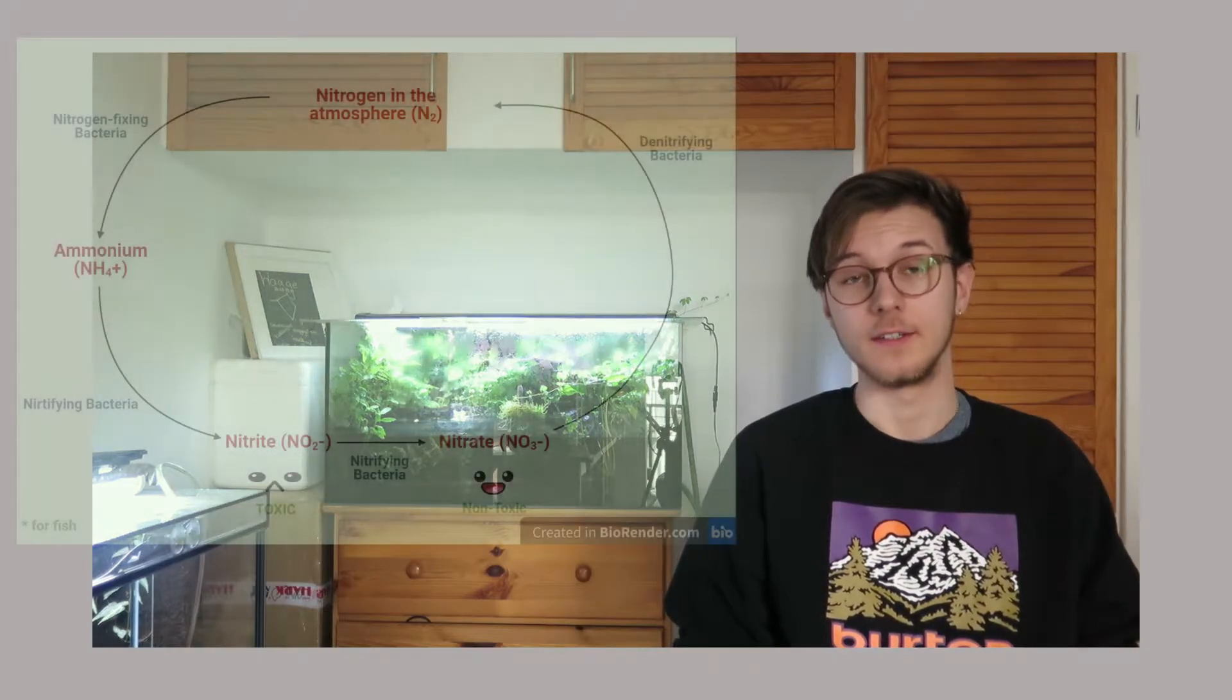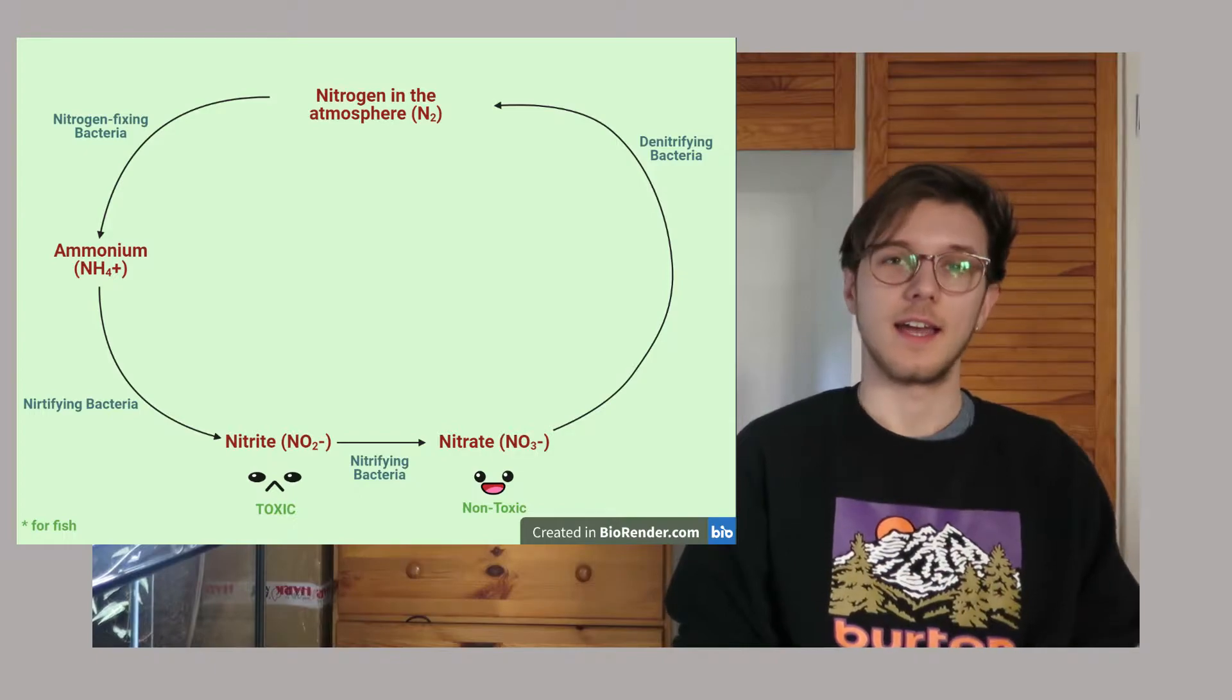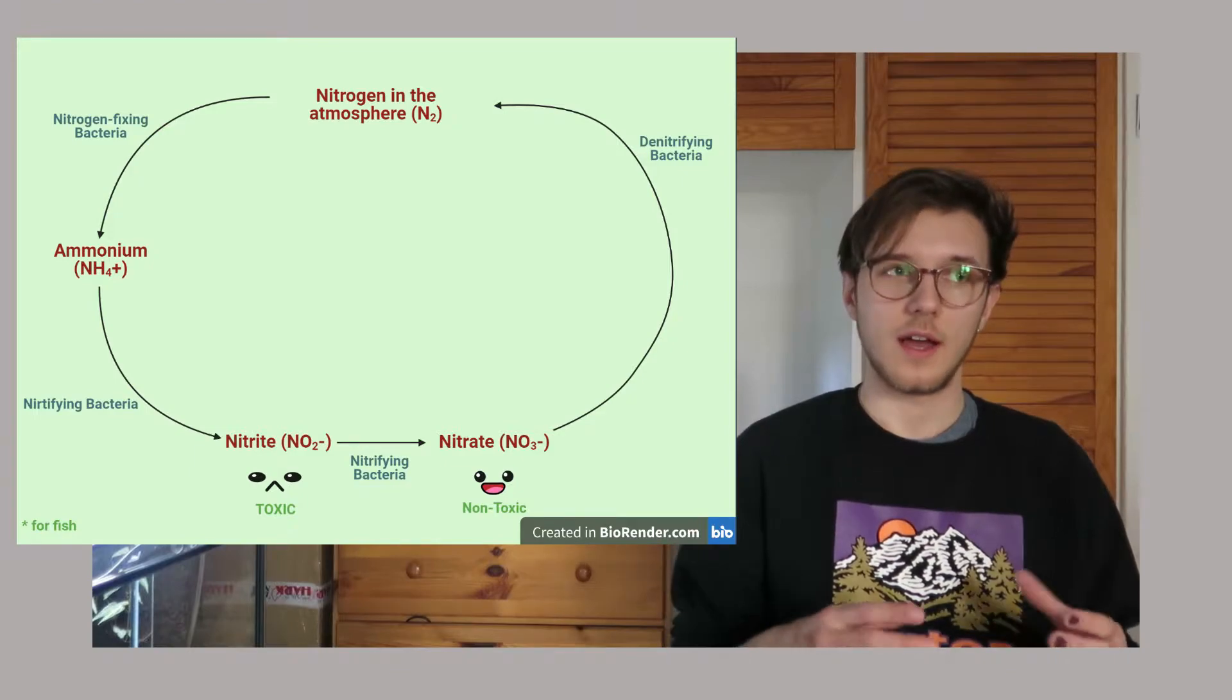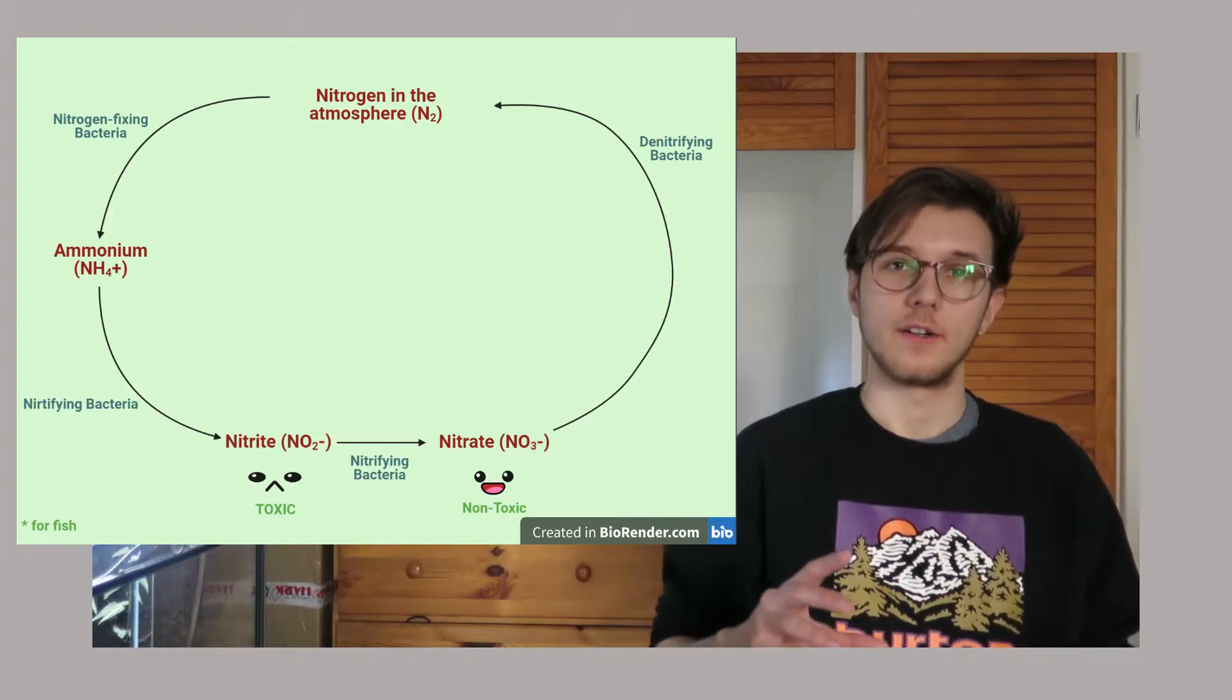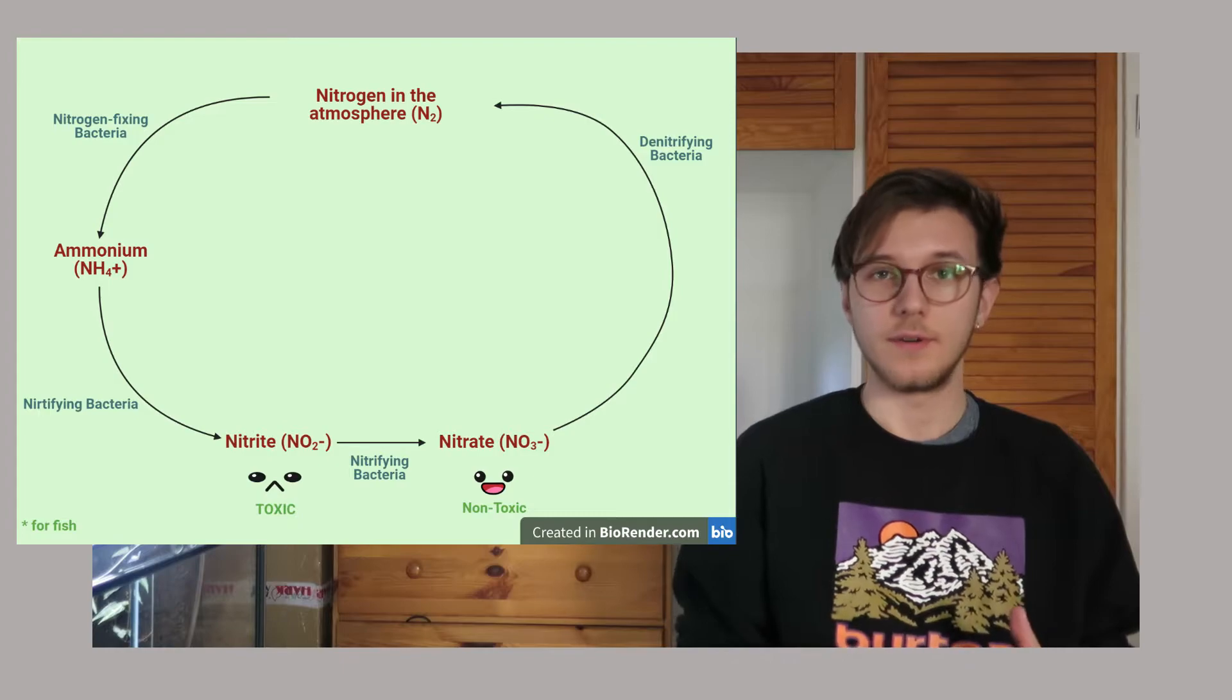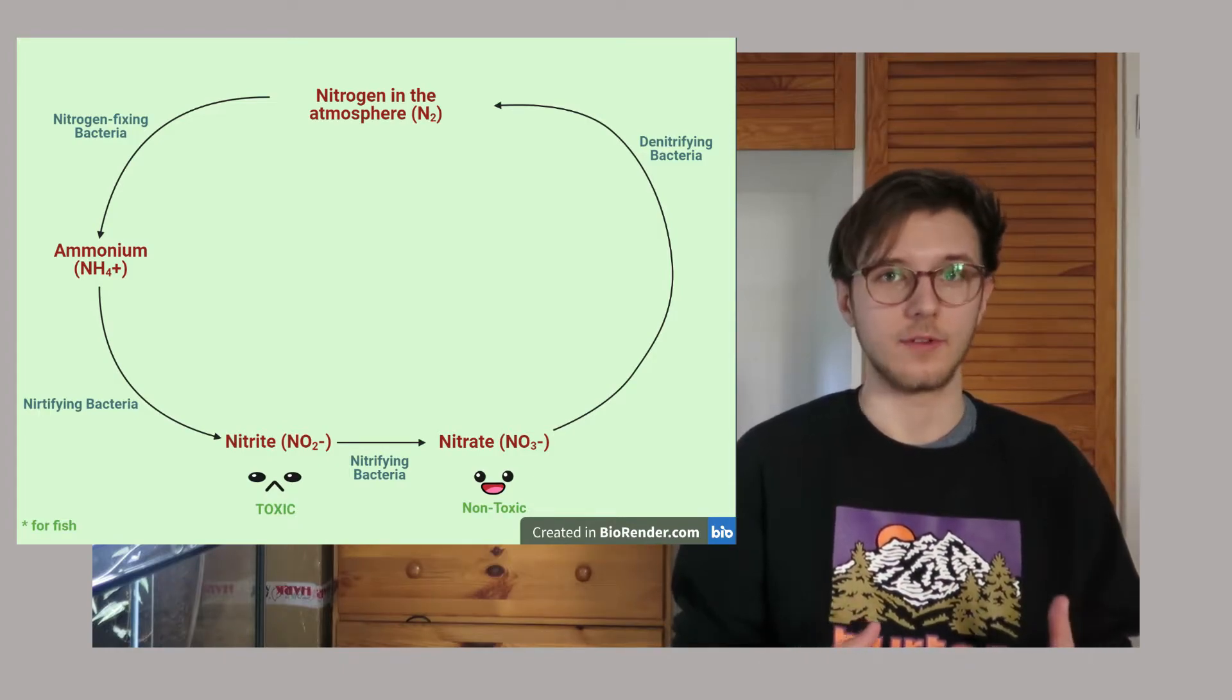Okay, so we start off with the nitrogen cycle. It roughly looks like this, and what you see here is pretty easy to understand. You have atmospheric nitrogen, it's a gas, and then there are these nitrogen-fixing bacteria that are turning the N2, the gas form of nitrogen, into ammonium NH4+.